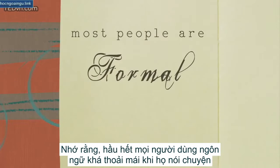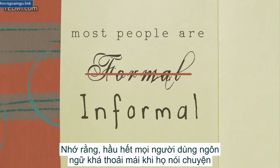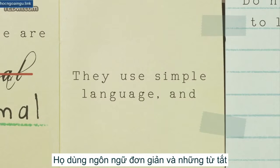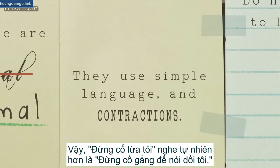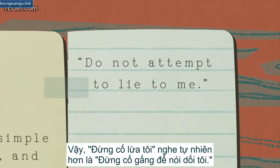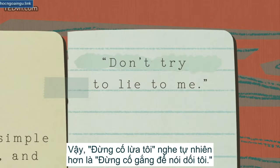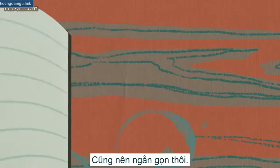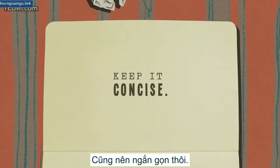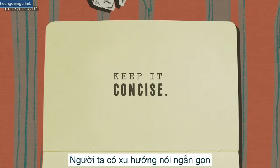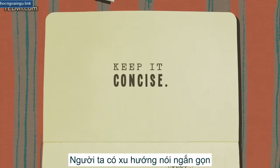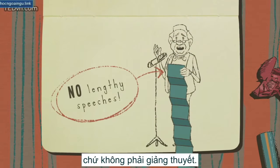Remember, most people are usually pretty informal when they speak. They use simple language and contractions. So, "do not attempt to lie to me" sounds more natural as "don't try to lie to me." Also, keep it short. People tend to speak in short bursts, not lengthy speeches.